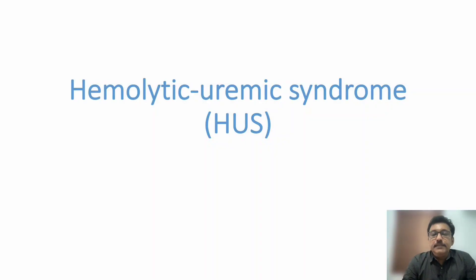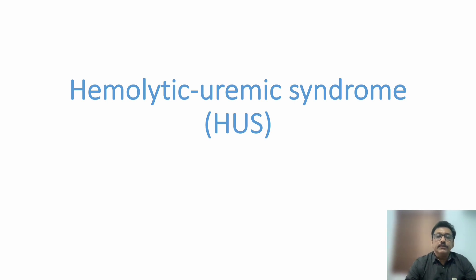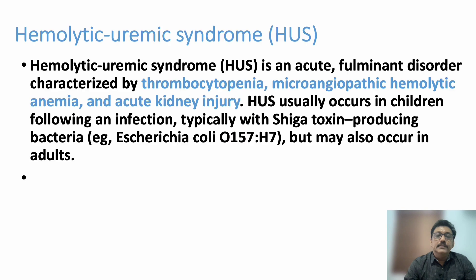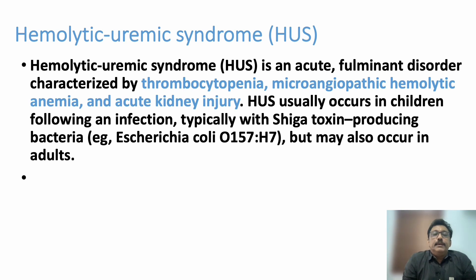Welcome to AATCM, the emergency medicine channel. Today we discuss hemolytic uremic syndrome. We have previously discussed thrombotic thrombocytopenic purpura, which is one of the closest differential diagnoses for HUS. HUS and TTP share similar features, so we will explore their clinical and differentiating characteristics.